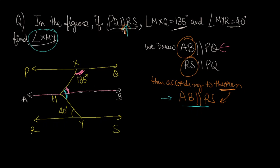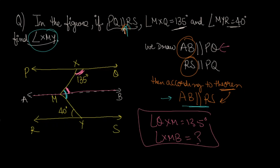If you know interior angles and corresponding angles, you can read about them in the playlist. On the same side, looking at lines PQ and AB, angle QXM equals 135 degrees. Since co-interior angles on the same side of a transversal sum to 180 degrees, angle XMB equals 180 minus 135, which is 45 degrees.